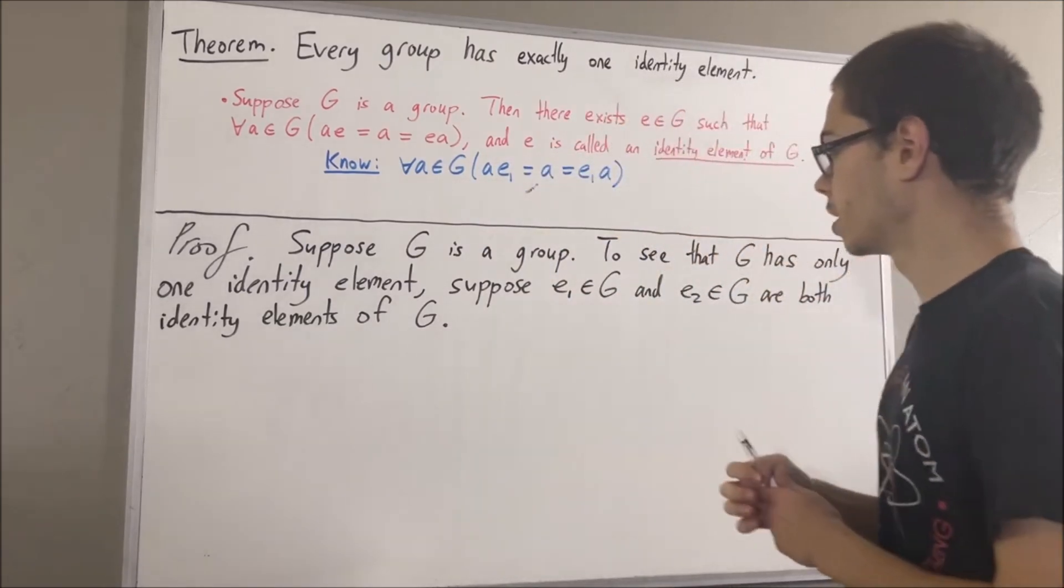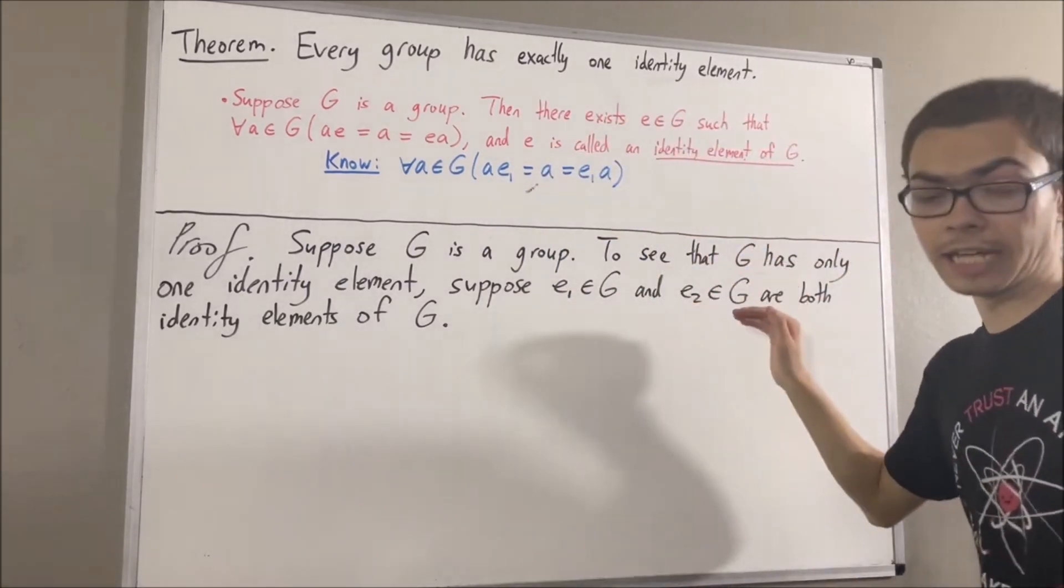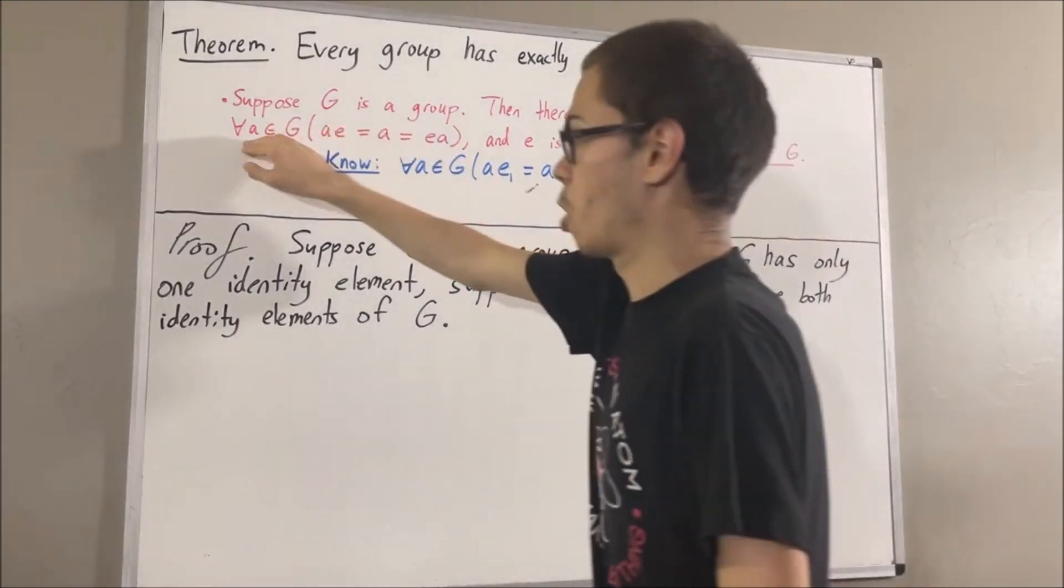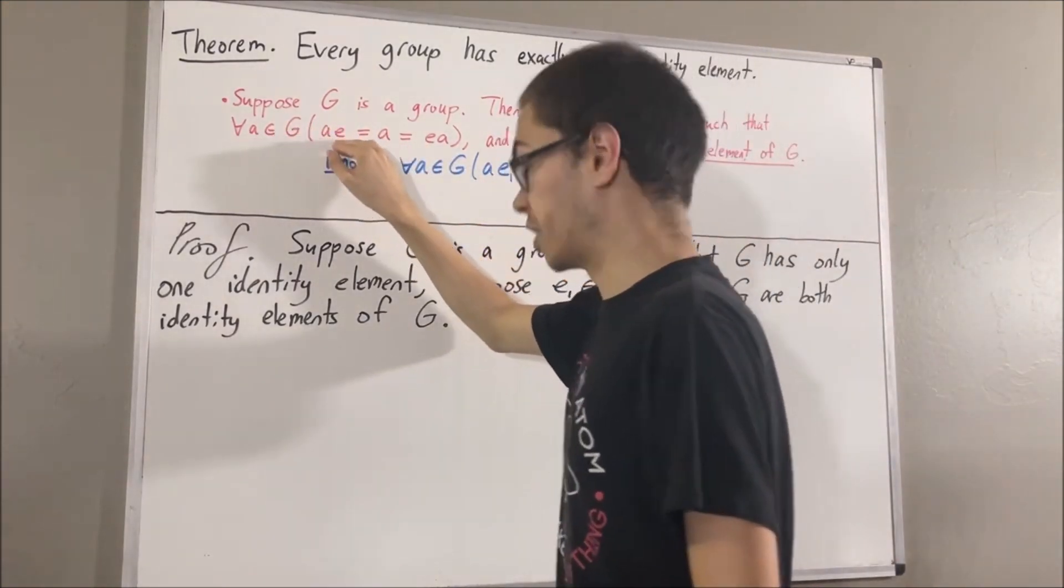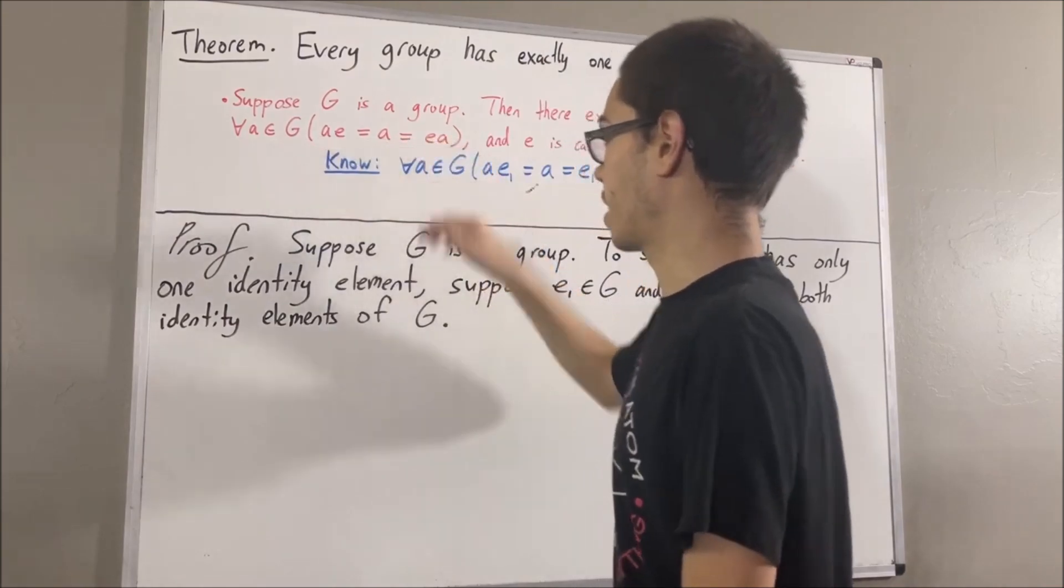And similarly, to say that e2 is an identity element of G means for all a in G, a times e2 is equal to a, which is equal to e2 times a.